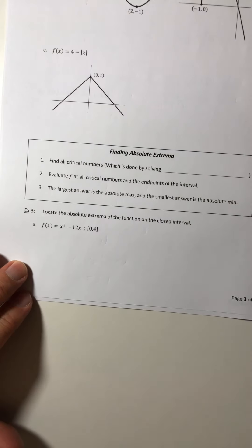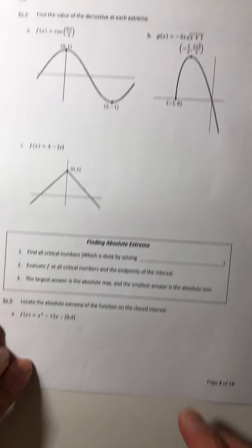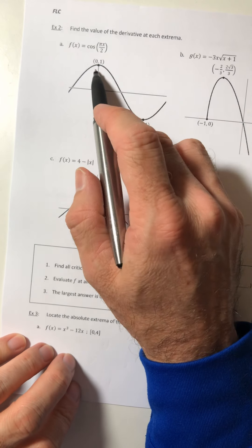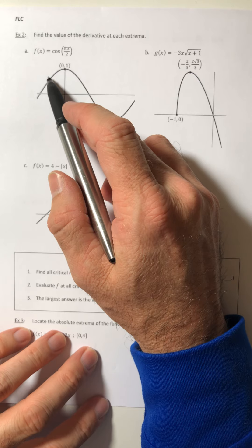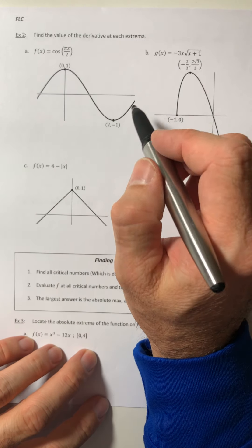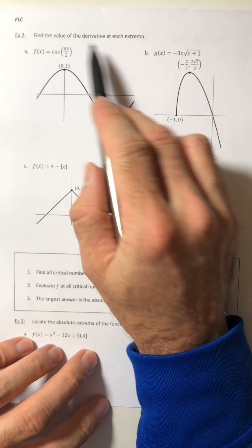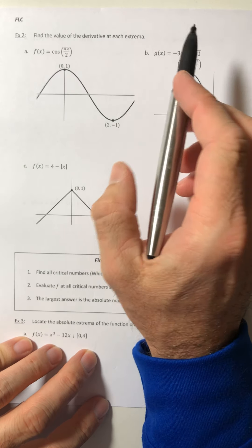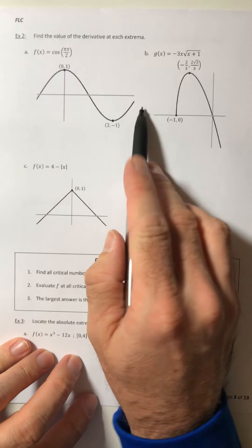Okay, let's move on to example two. Find the value of the derivative at each extrema. So the book has you do it one way, but we're going to kind of cheat, because we're going to use the fact that they told us that these things were extrema.